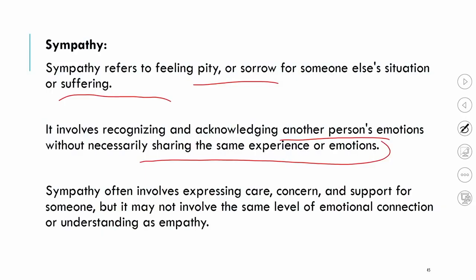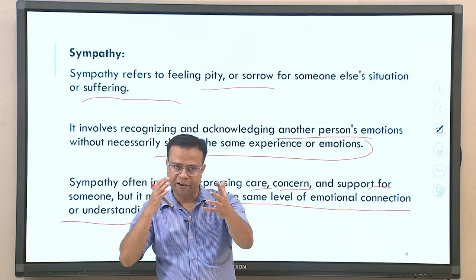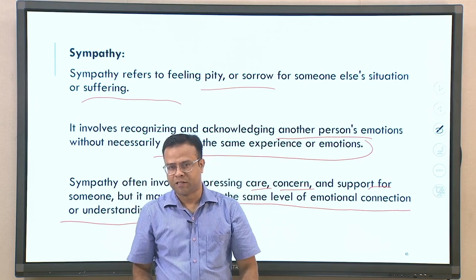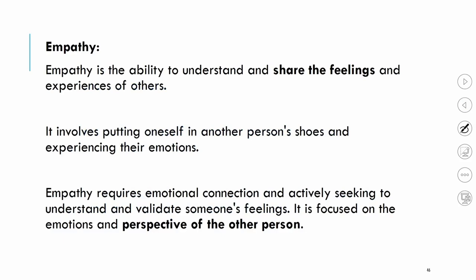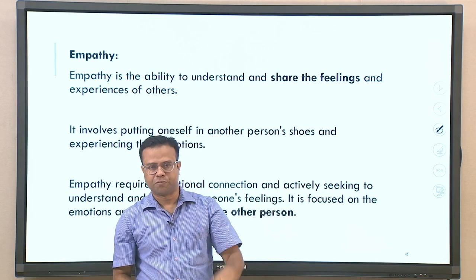Empathy is a little deeper, with more identification. Sympathy often involves expressing care and showing concern and support for someone, but it may not involve the same level of emotional connection and understanding as empathy. In empathy, the connection is much more intense and deeper — you identify with that person's situation and try to see from their perspective. In sympathy, you acknowledge the person is in a bad situation and show concern, but you may not fully comprehend their perspective.